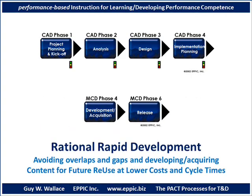The goal of a curriculum architecture design is to lead to rational rapid development, avoiding overlaps and gaps in the content to be produced, and developing and acquiring content for future reuse at lower costs and cycle times. The PAC processes is not only all about performance, it's all about content reuse as appropriate — as is, or after modification.